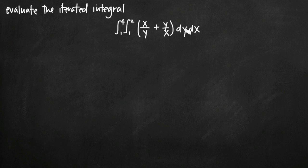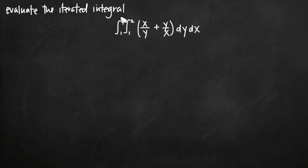Keep in mind that with iterated integrals, you can see them written as dy dx or in the opposite order, dx dy. In the opposite order, you have the opposite order of limits of integration. If dx is on the inside, then the inner limits of integration relate to x. And if dy is on the outside, then those outer limits of integration are with respect to y.